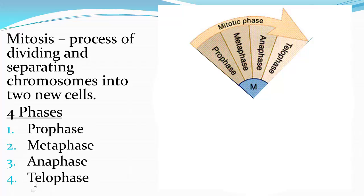The next stage is mitosis, defined as the process of dividing and separating chromosomes into two new cells. There are four phases of mitosis: prophase, metaphase, anaphase, and telophase. As you can see, the cell only spends about a quarter of its time in mitosis.